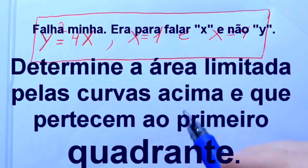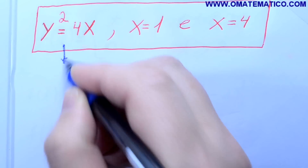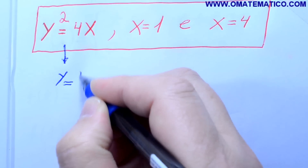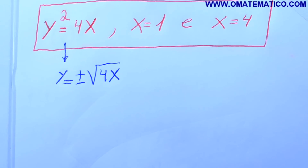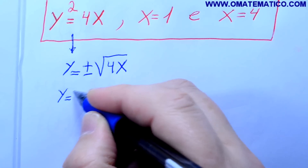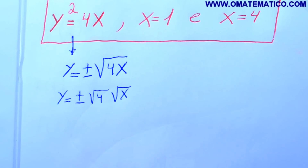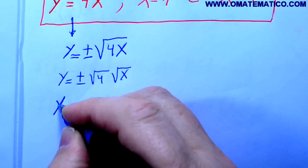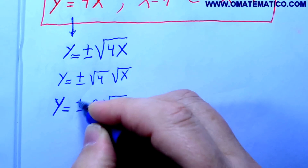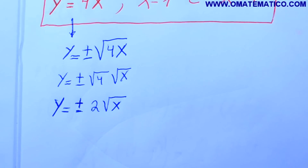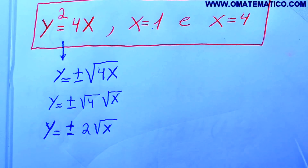Pertencente ao primeiro quadrante. Eu vou primeiro tentar isolar o y aqui. y é igual a mais ou menos raiz de 4x. Raiz de 4 é 2, então y igual a mais ou menos 2 raiz de x. Eu tenho duas funções aqui. E temos também x igual a 1 e x igual a 4.